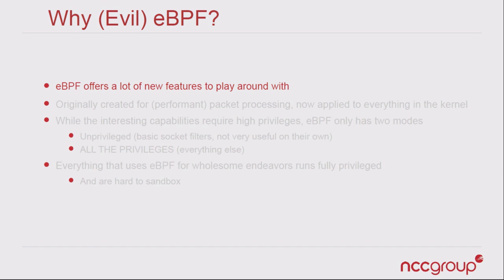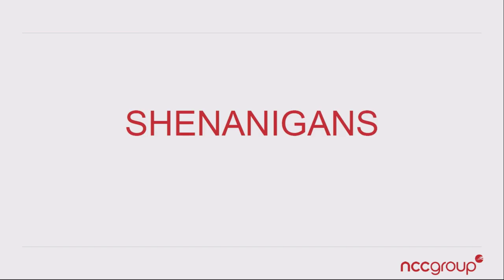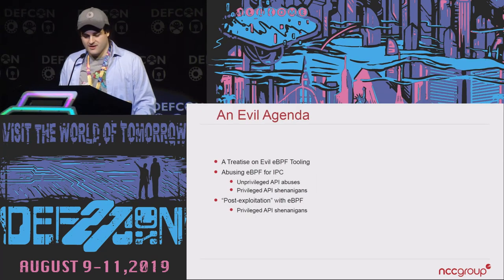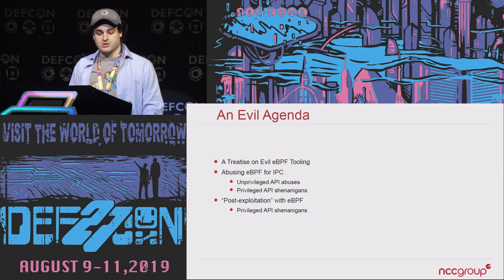So why evil eBPF? Because there are a lot of fun things we can do with these fancy new APIs that the people who made them were not really thinking of, because they were trying to move real fast. This talk covers shenanigans — obfuscated communication channels between processes that are really hard to track unless you're using very similar technologies, and root kits. Lots of root kits.